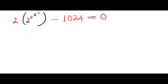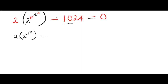Hello viewers, welcome to my YouTube channel. In this video we are going to solve this exponential equation. To solve this equation, let's take this negative 1024 across the equality sign, so we're gonna have this equals to — the negative sign will become positive when it crosses the equality sign — positive 1024.